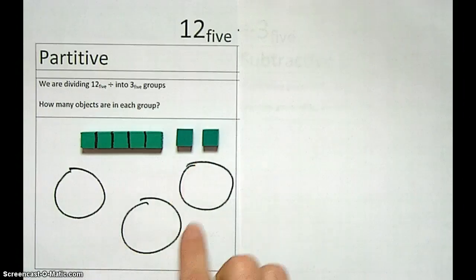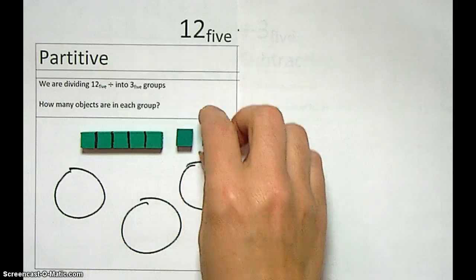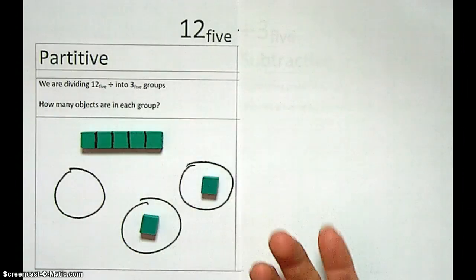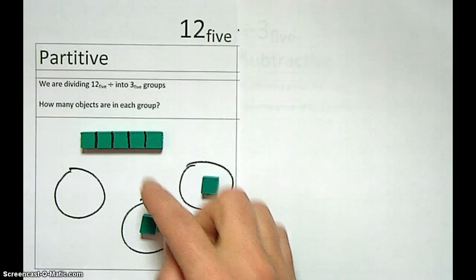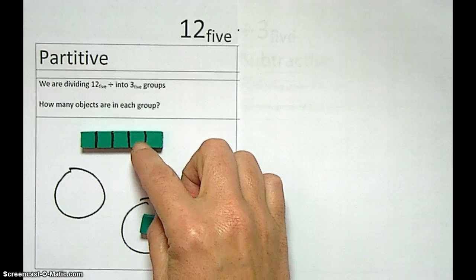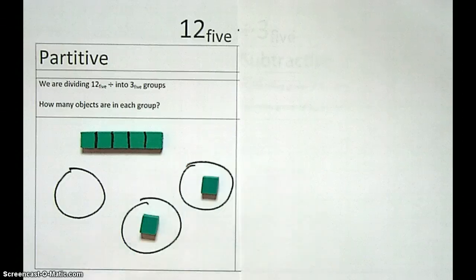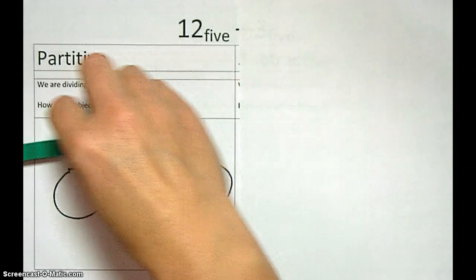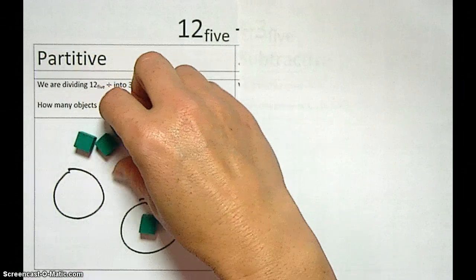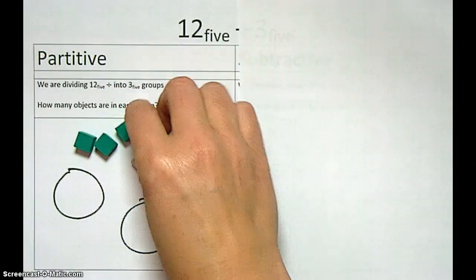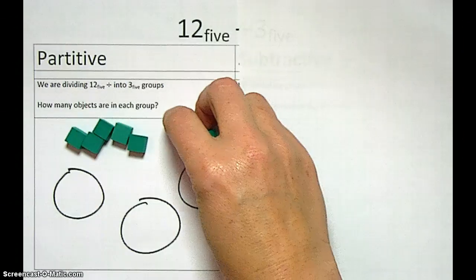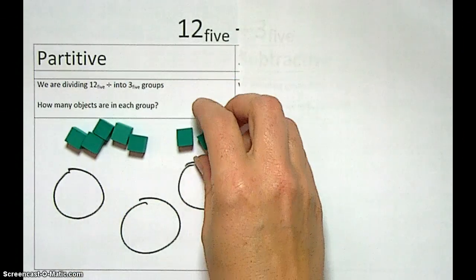And we need to deal this out. We can start dealing if we want to, but we can't complete dealing. What do you think we need to do? You think we need to exchange this for 5 1s? Let's do that. Let's get 5 1s and get rid of that 1 long of 5s. And then continue our process of dealing out or start over again anyway. So here's our 1, 2 exchanged for 1s.